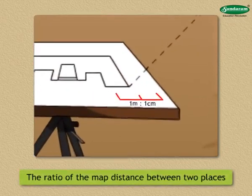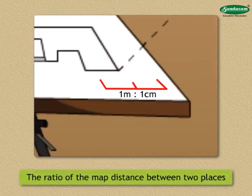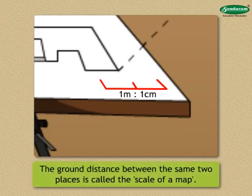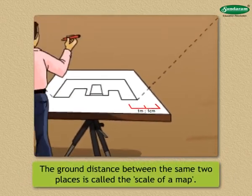The ratio of the map distance between two places and the ground distance between the same two places is called the scale of a map.